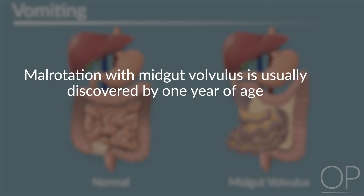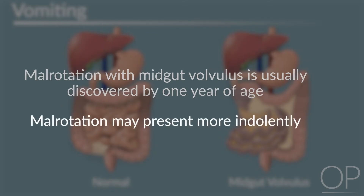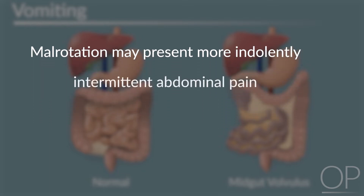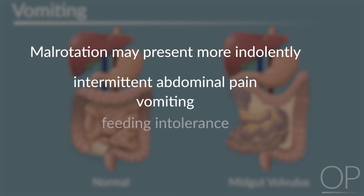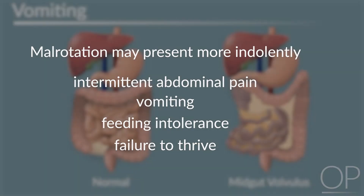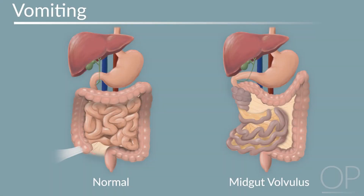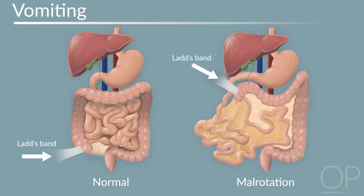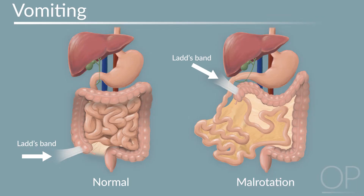Malrotation with midgut volvulus is usually discovered by one year of age, but malrotation may present more indolently with intermittent abdominal pain and vomiting, or feeding intolerance and failure to thrive due to intermittent volvulus or partial obstruction of the duodenum secondary to Ladd's bands. Ladd's bands are peritoneal attachments that connect the cecum to the lateral abdominal wall in malrotation. Where the cecum is in the right upper quadrant, these bands cross over the duodenum causing an obstruction.